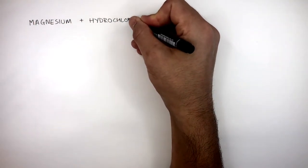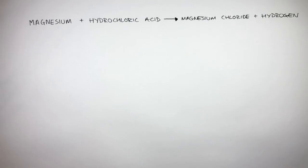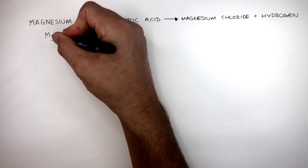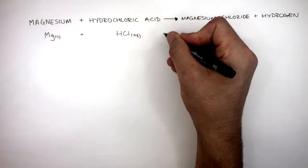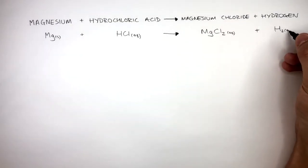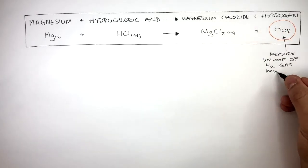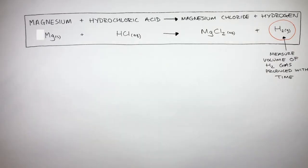We are now going to apply our understanding about how concentration affects the rate of reaction through the chemical reaction of magnesium reacting with hydrochloric acid to form magnesium chloride and hydrogen. The balanced equation is Mg plus 2HCl reacts to form MgCl2 aqueous plus H2 gas. To measure the rate of reaction we're going to focus on the hydrogen gas produced. We're going to measure the volume of hydrogen gas produced with time.